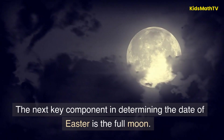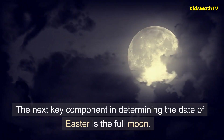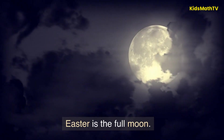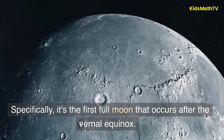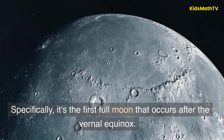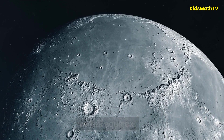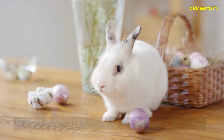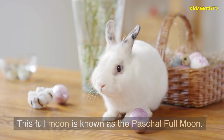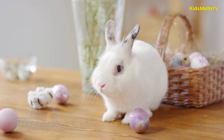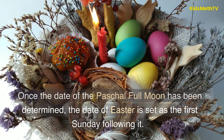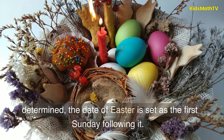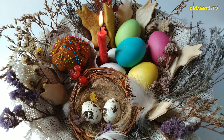The next key component in determining the date of Easter is the full moon. Specifically, it's the first full moon that occurs after the vernal equinox. This full moon is known as the Paschal full moon. Once the date of the Paschal full moon has been determined, the date of Easter is set as the first Sunday following it.